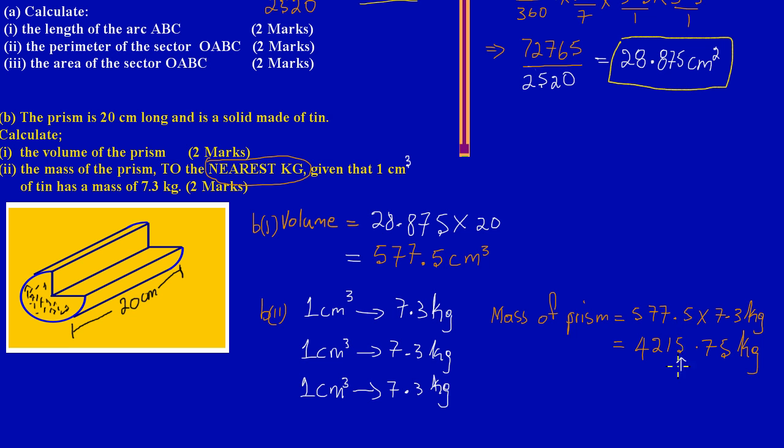To the nearest kilogram, I'm going to position myself right at the 5, then look to my right to see if the number that follows is five or more. Yes, that's a seven, so I'm simply going to add one to the position I'm in. This gives 4,216 kilograms.